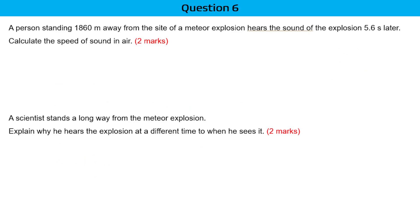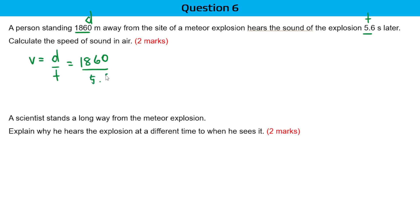A person is standing 1,860 meters away from the site of a meteor and hears the sound of the explosion 5.6 seconds later. Calculate the speed of sound in air. This is your distance, and 5.6 seconds is your time. Using V equals D over T, your distance is 1,860 and the time taken is 5.6, so the speed is around 332 meters per second.